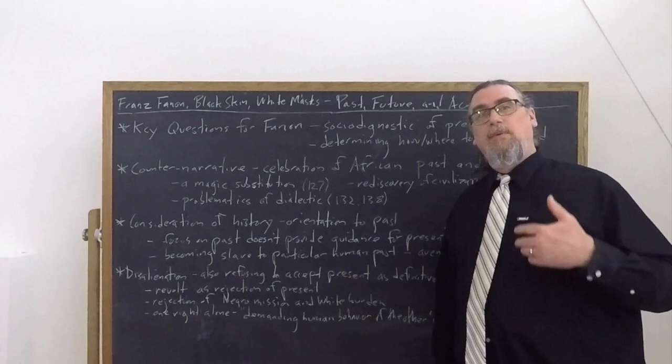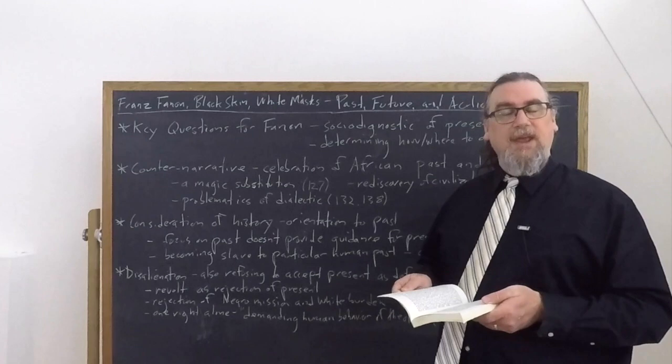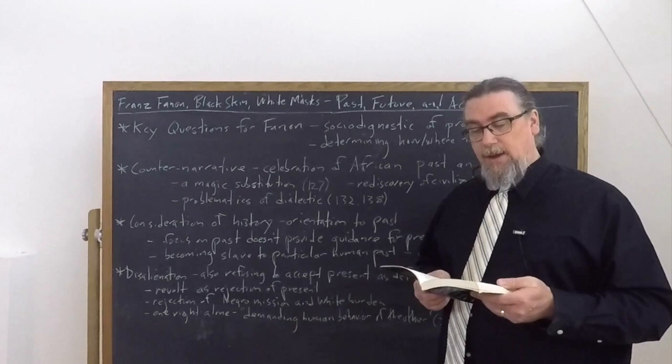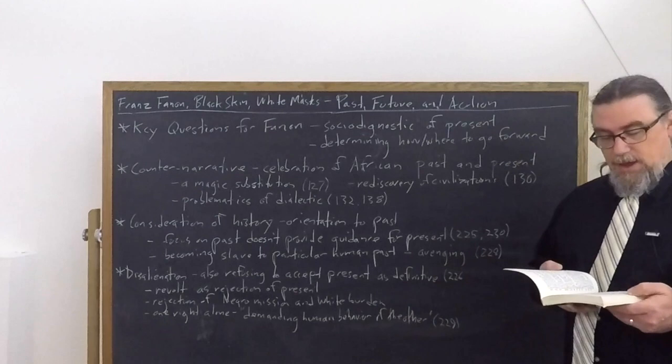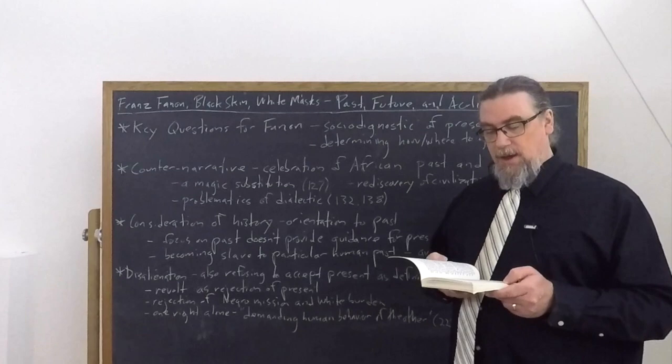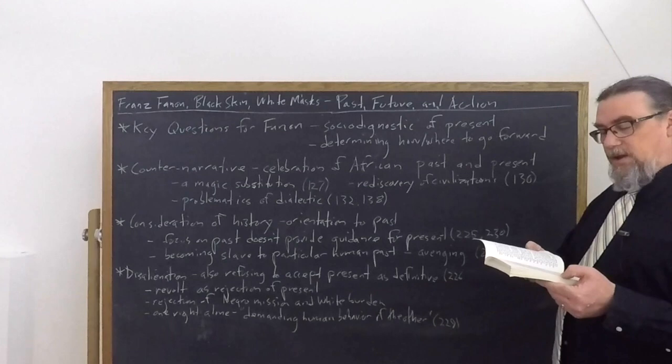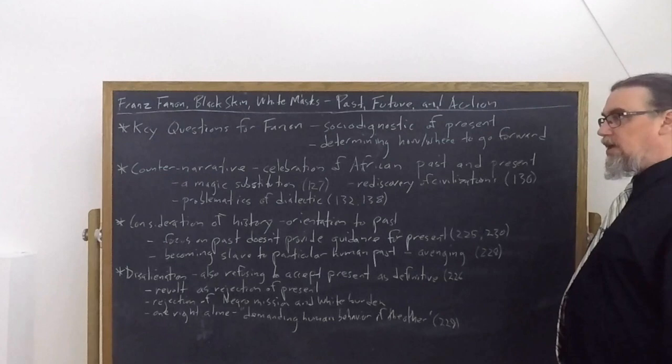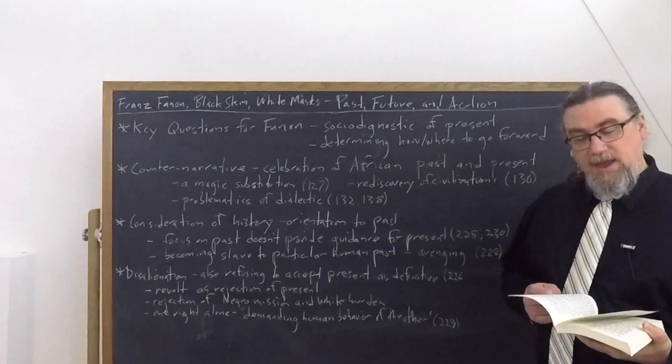And he talks about becoming a slave to the past, becoming a slave to a particular interpretation of the human past and then being stuck in this sort of cycle of wanting to attain some sort of rectification or revenge. He says, the problem considered here is one of time. Those Negroes and white men will be disalienated who refuse to let themselves be sealed away in the materialized tower of the past. And so for many, he talks about this as, I don't have a purpose on earth as avenging the Negro of the 17th century. I don't have to be trying to do this. As he says, I, as a man of color, I don't have the right to seek ways of stamping down the pride of my former master. I neither have the right or duty to claim reparation for the domestication of my ancestors.